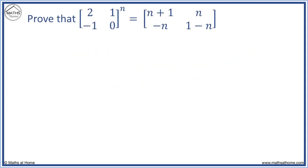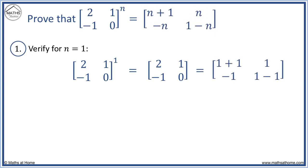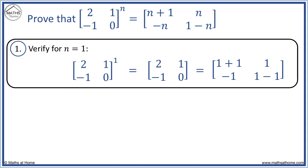Here is another example. Verifying for n equals 1: the matrix to the power of 1 equals the matrix with entries 2, 1, minus 1, 0. This is the same result obtained by substituting n equals 1 on the right-hand side, since 1 plus 1 equals 2 and 1 minus 1 equals 0.